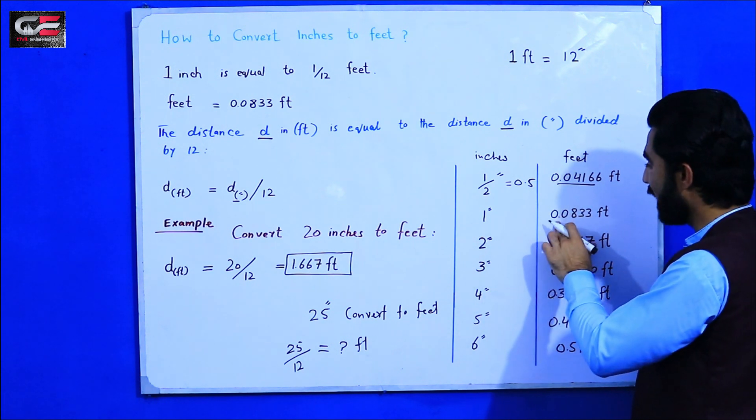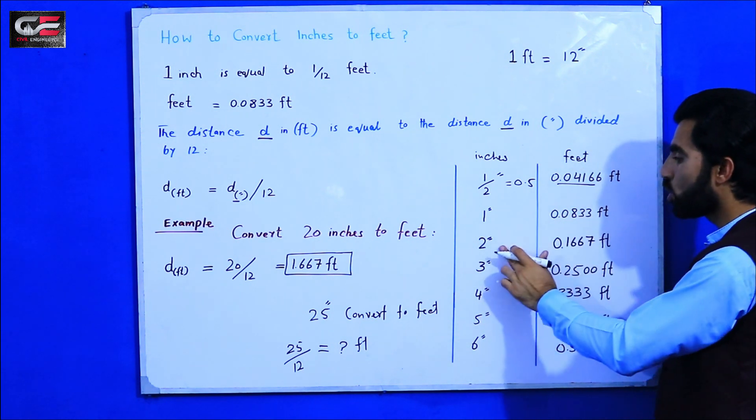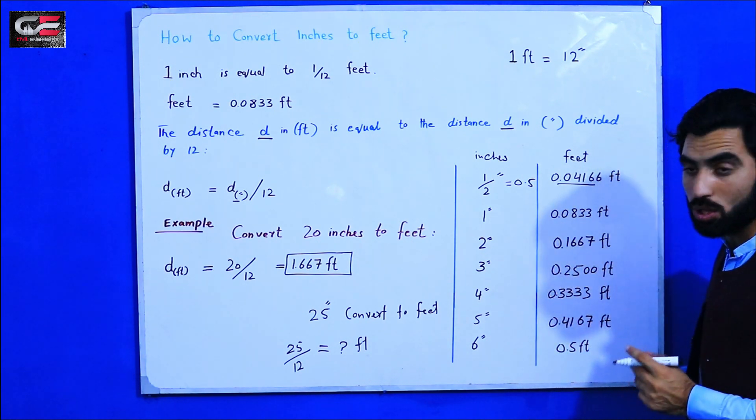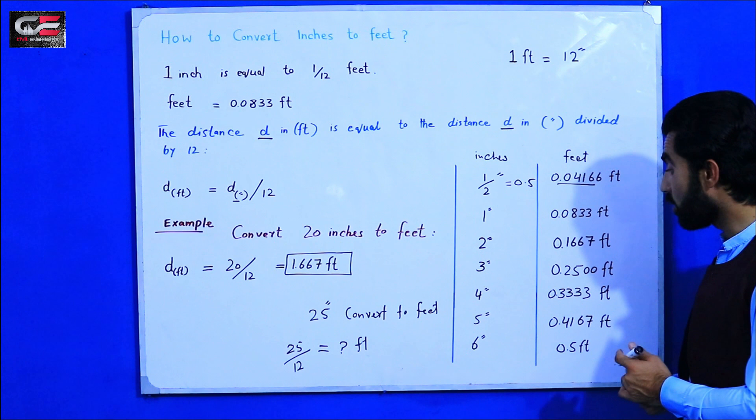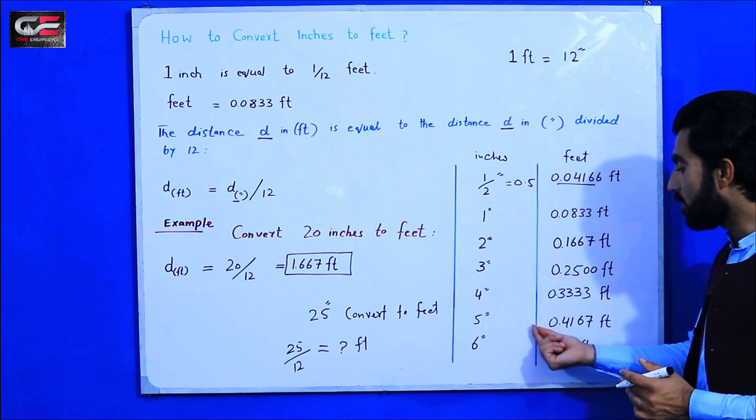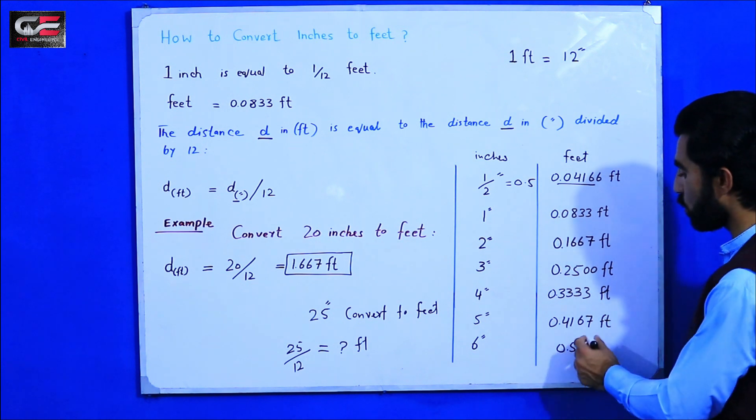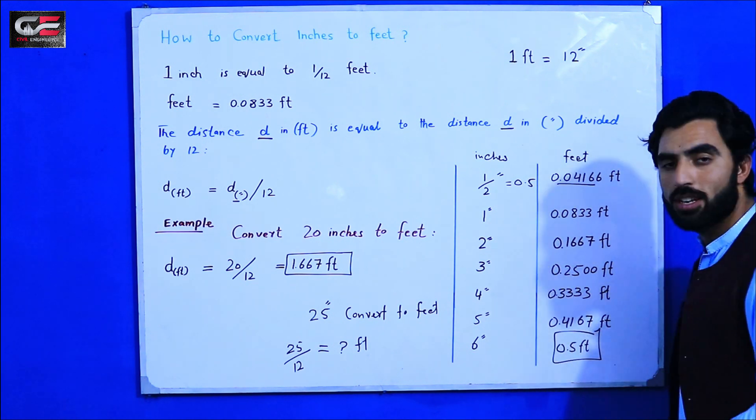1 inch divided by 12 gives you 0.0833 feet. 2 inches is equal to 0.1667 feet. 3 inches is equal to 0.2500 feet. 4 inches is 0.333 feet. 5 inches is 0.4167 feet. And 6 inches is equal to 0.5 feet.